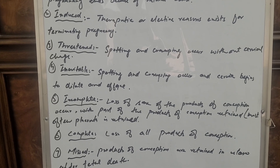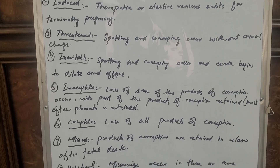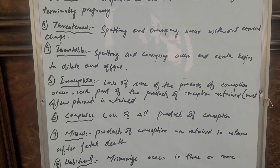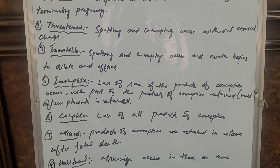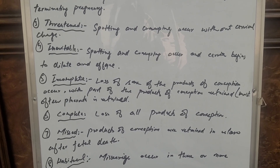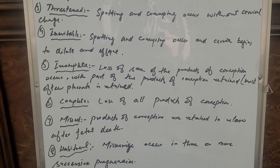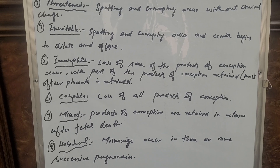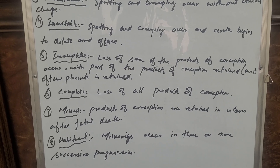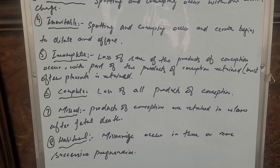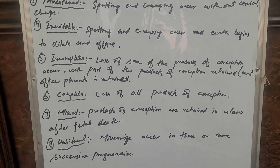Sixth, complete abortion: loss of all products of conception. Seventh, missed abortion: products of conception are retained in utero after fetal death. Eighth, habitual miscarriage: miscarriage occurs in three or more successive pregnancies.